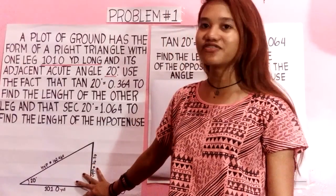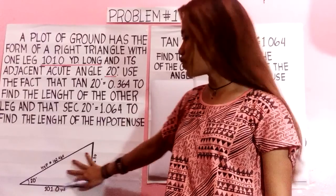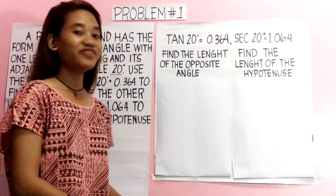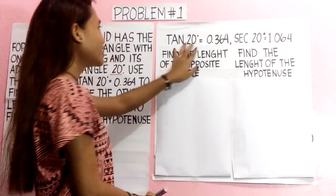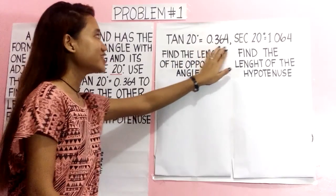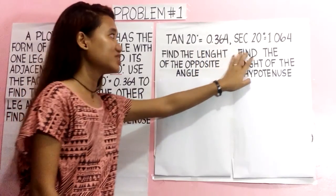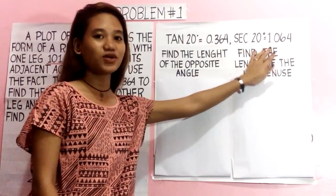So this is the figure of problem number one. The givens are tan 20 degrees equals 0.364 and sec 20 degrees equals 1.064.